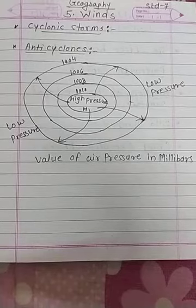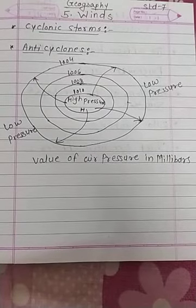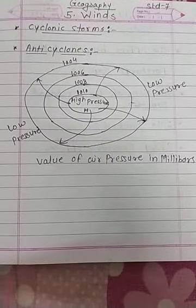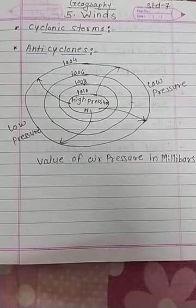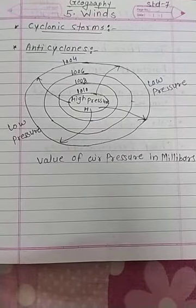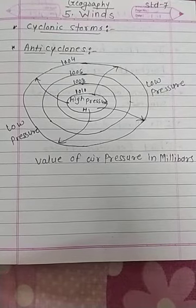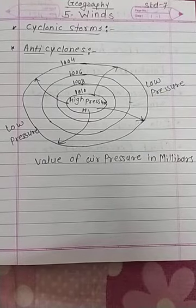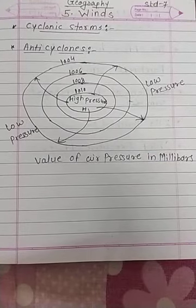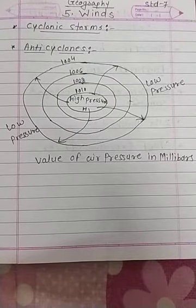The cyclones in the Caribbean Sea are known as hurricanes. These are also destructive in nature. During these storms, the minimum velocity of the wind is 60 km per hour. Cyclones also originate in the temperate zone, but they are not so powerful and hence they are not destructive.